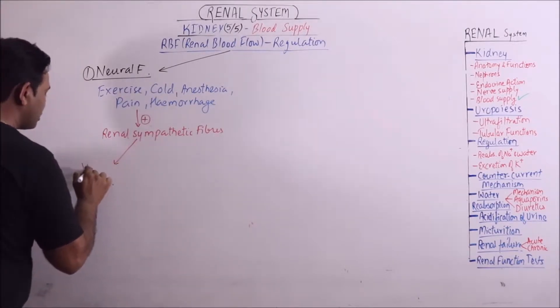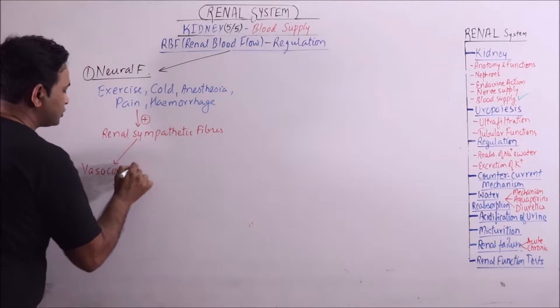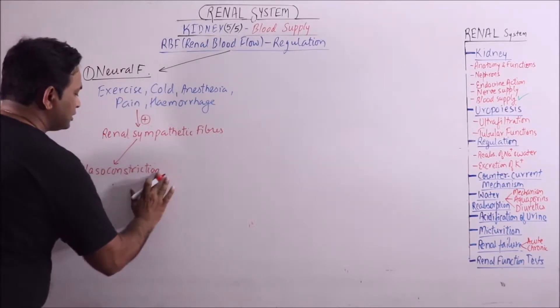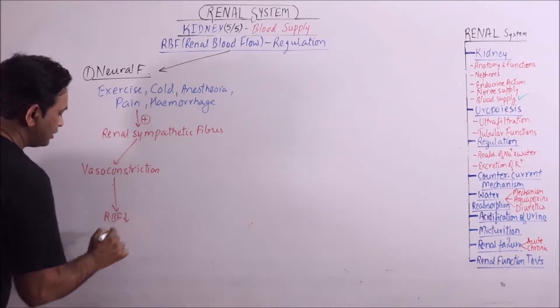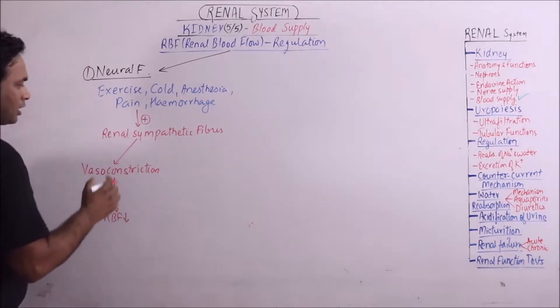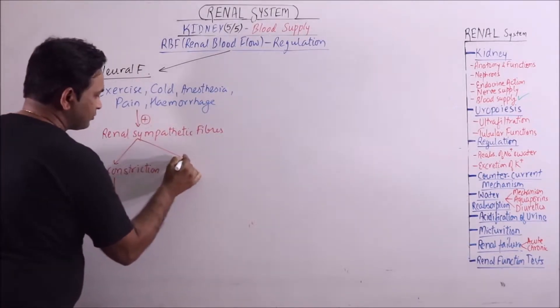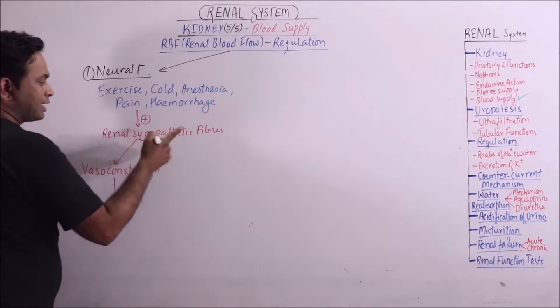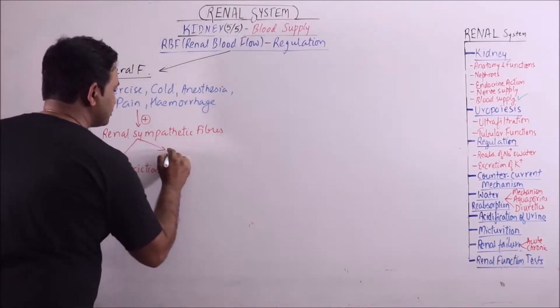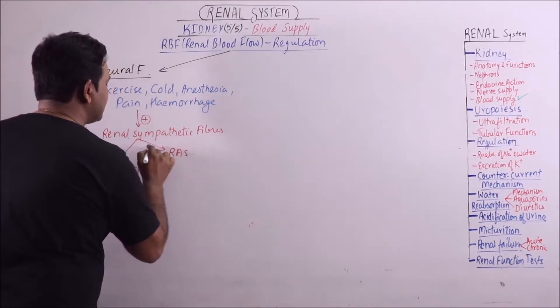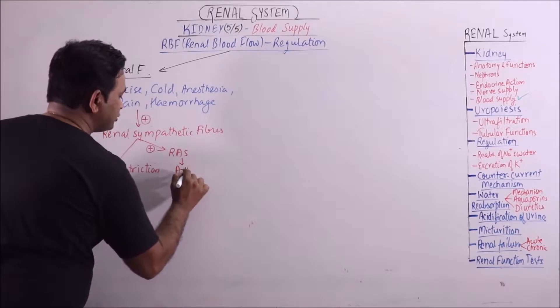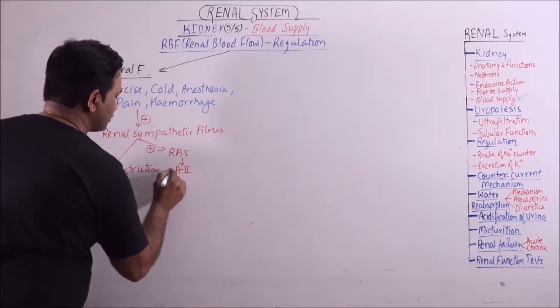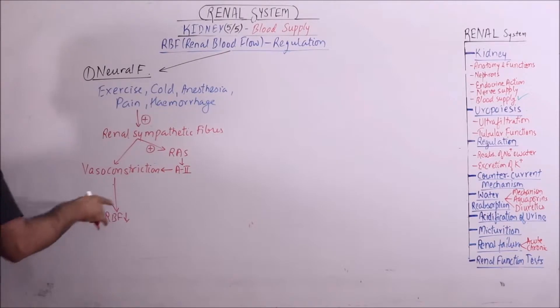When such fibers are stimulated, vasoconstriction occurs and this vasoconstriction will result in decrease in RBF. Another important thing is that the activation of renal sympathetic fibers stimulate the renin angiotensin system which result in formation of angiotensin 2, which further results in vasoconstriction resulting in further decrease in RBF.